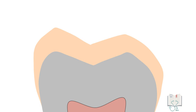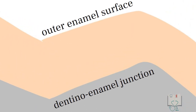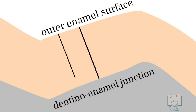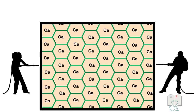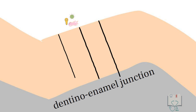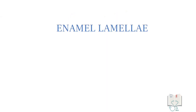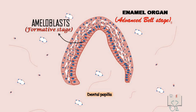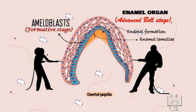Enamel lamellae are thin leaf-like structures extending from the enamel surface towards the dentino-enamel junction. Depending on their length, they may end before reaching the dentino-enamel junction, at the junction, or may cross it and end in the dentine. Enamel lamellae form at areas of tension and are hypocalcified structures. These hypomineralized areas may act as a pathway for bacteria and the development of caries. They are of three types depending on their stage of formation. Type A lamellae are formed during tooth development — after ameloblast differentiation and during deposition of enamel — and so are restricted to enamel, never crossing the dentino-enamel junction.